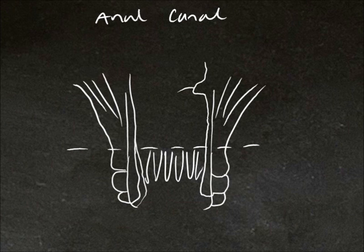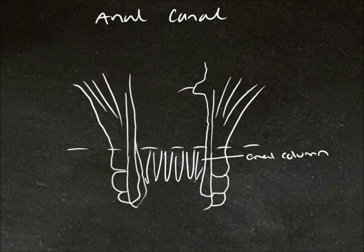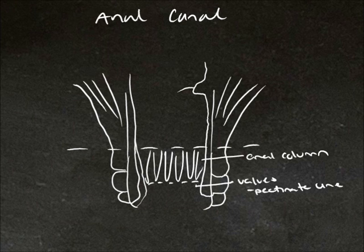So let's take a look at the anal canal. We've cut through the lumen so we can reveal its structure. We can see these vertical folds. These are called anal columns and they mark the junction between the rectum and the anus. Down here at the lower end of the columns, there are some transverse folds and these are called valves. This line of valves is known as the pectinate line. Between the columns are some spaces and these spaces are known as anal sinuses.